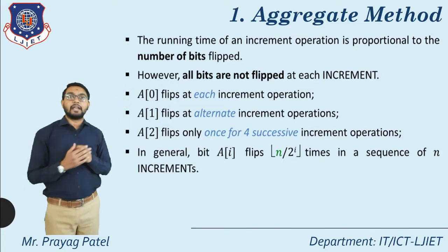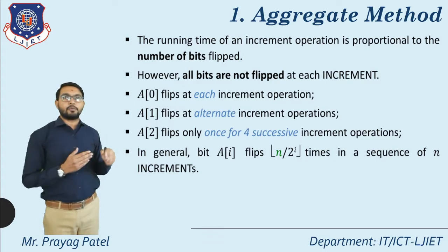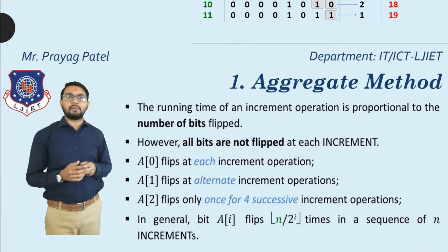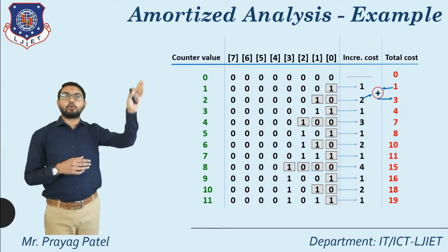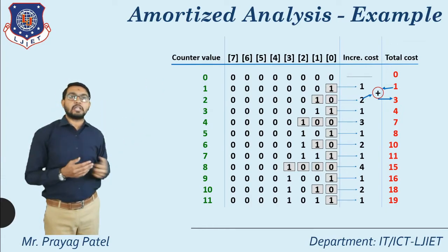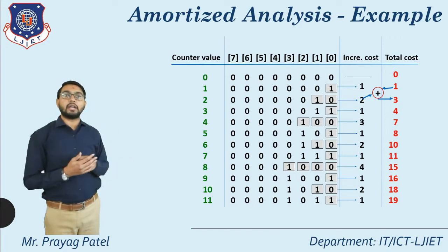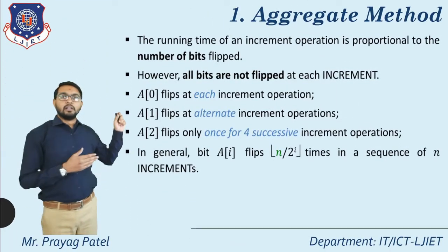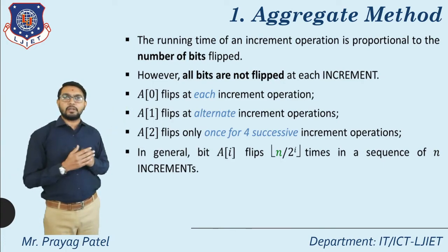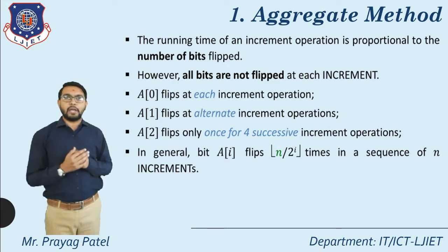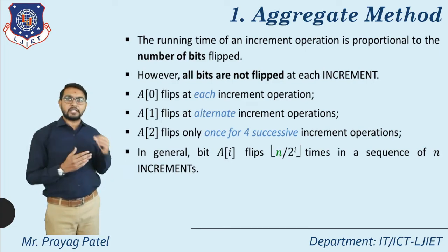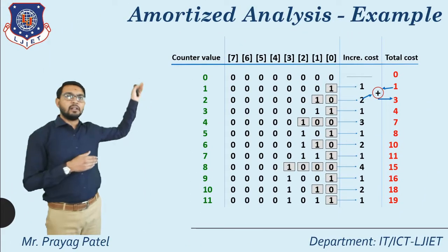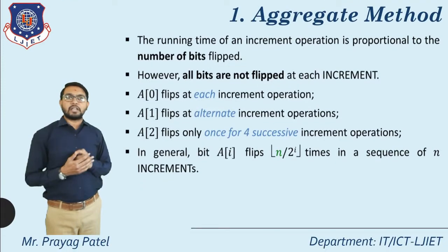Now the first technique: the aggregate method. The running time of the increment operation is proportional to the number of bits flipped. Consider bit 0 through bit 7. Not all bits are flipped at each increment operation. A[0], the least significant bit, flips every increment operation — we can see the last bit changes every time, so it changes n times.